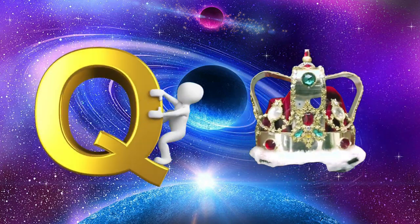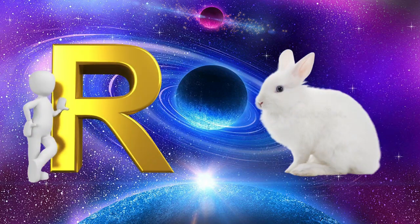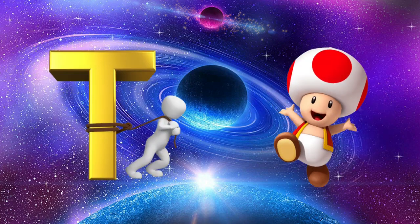Q is for queen, q-q-queen. R is for rabbit, r-r-rabbit. S is for sun, s-s-sun. T is for toad, t-t-toad.